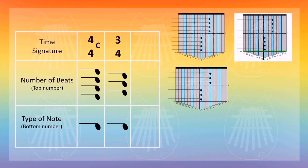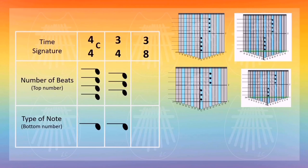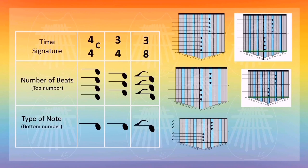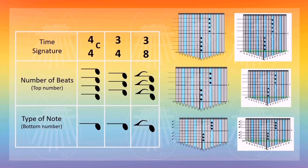This is what 3/4 looks like on kalimba tabs. This one is 3/8. For the number of beats, it would be 3 beats. The bottom number is 8, which you can think of as 1 over 8, so you would use an eighth note here. This is how it would look like on kalimba tabs.